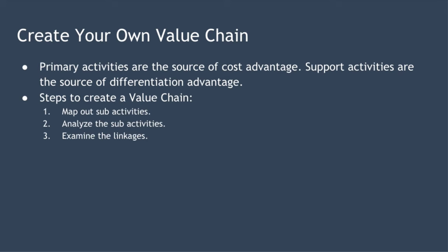Mapping and using Porter's value chain isn't quick or easy and is going to require a lot of deep thought. But if you want to generate your own, you can follow these steps. The first step is to map out your sub-activities. For all primary and support activities, write down all the processes or activities that create value. Each organization is unique, so no two value chains should look the same. Once you've completed this step, you'll have a value chain diagram showing the essential value-creating parts of your business.